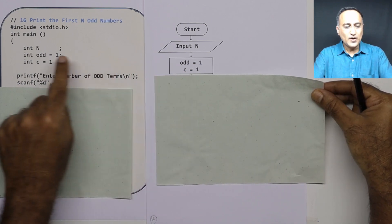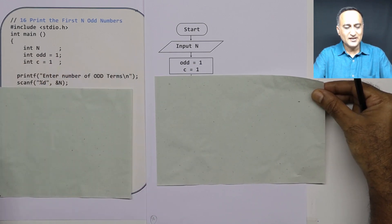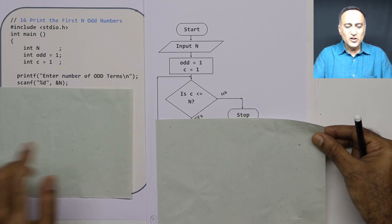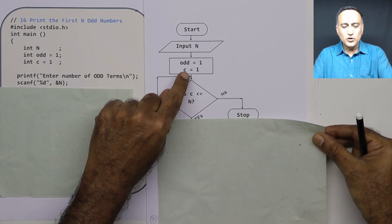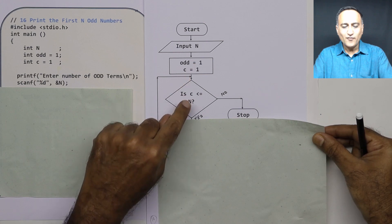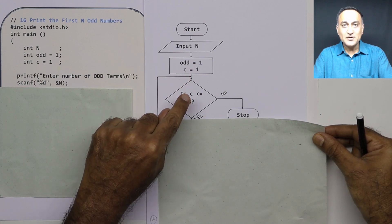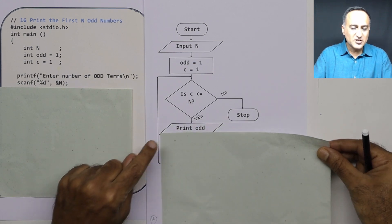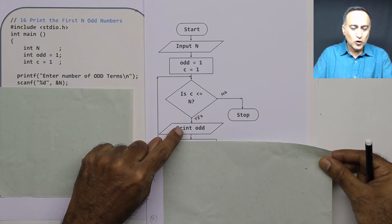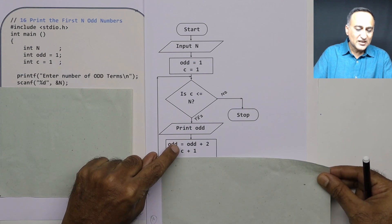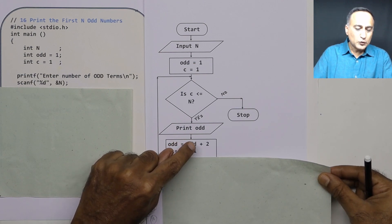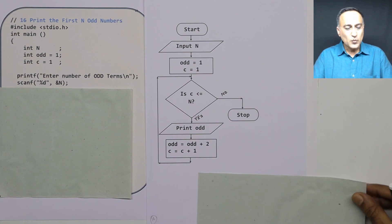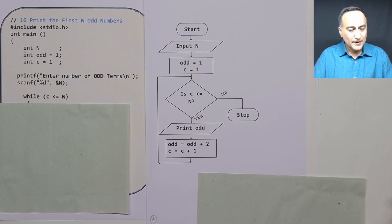Now, in this loop, as long as the count of the number of odd numbers I am printing is less than or equal to n, I am printing the odd number, increasing the odd number by 2, and increasing the count by 1.